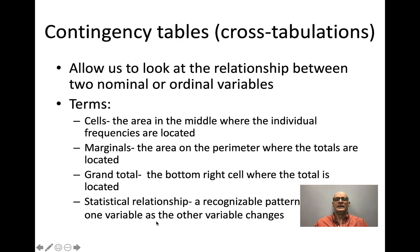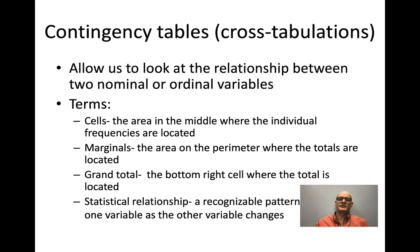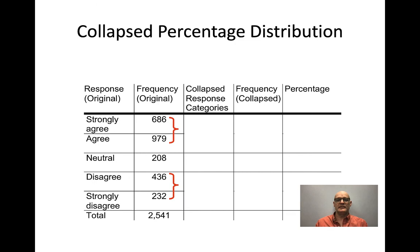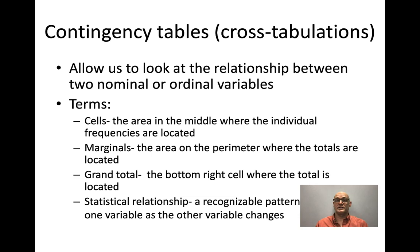A contingency table takes the idea of a frequency table and adds a second layer, allowing us to compare not just one variable but two — one characteristic of an individual with another. Key terms: cells are the pieces of data in the middle that we observe; marginals are located on the outside, at the end of each row and column; and we also look for a grand total.